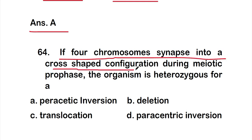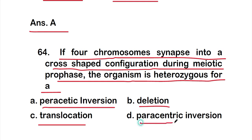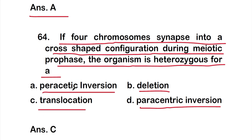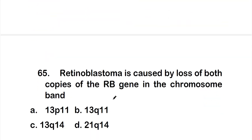Question 64: if four chromosomes synapse into a cross-shaped configuration during meiotic prophase, the organism is heterozygous for a — Option A: paracentric inversion, Option B: deletion, Option C: translocation, Option D: paracentric inversion. The right answer is Option C, translocation. The organism is heterozygous for a translocation.